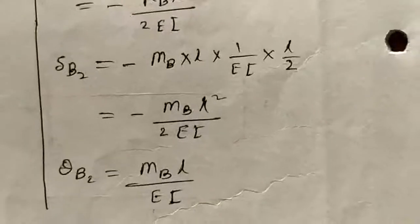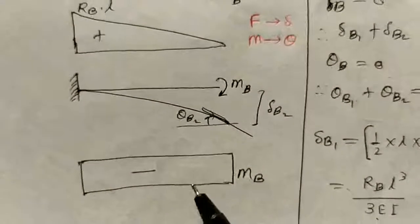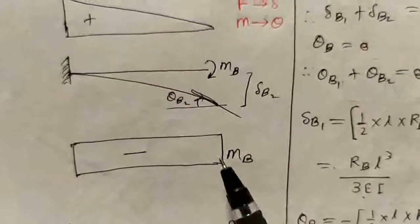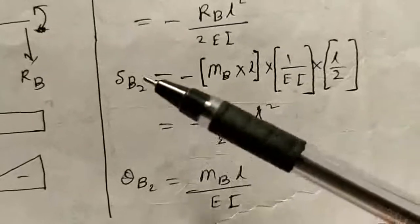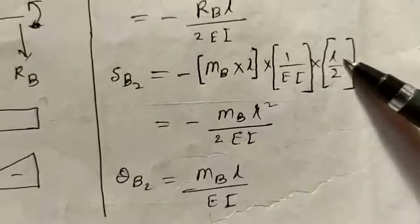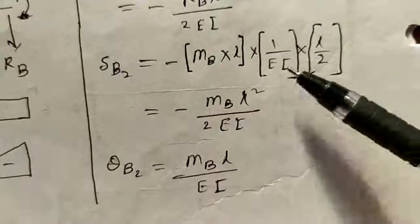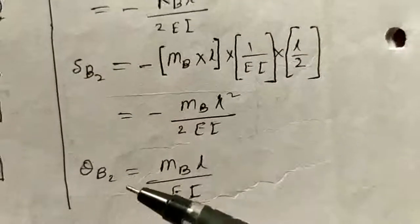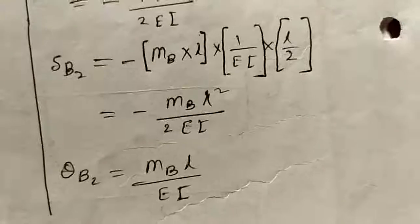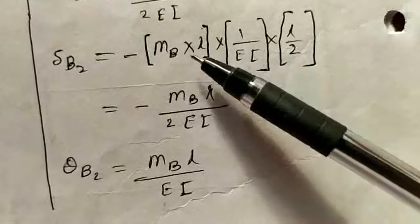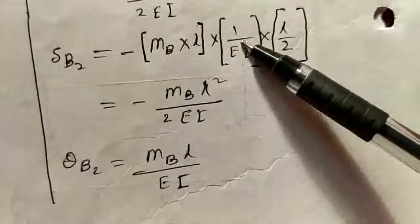Delta B2 and theta B2 are written by considering the rectangular M diagram for MB. We take the area of the rectangle, measure its centroid distance from point B, and multiply by 1/EI. Delta B2 is negative, so we get that answer. Theta B2 is opposite — positive — and is found by taking the area of the M/EI diagram multiplied by EI.